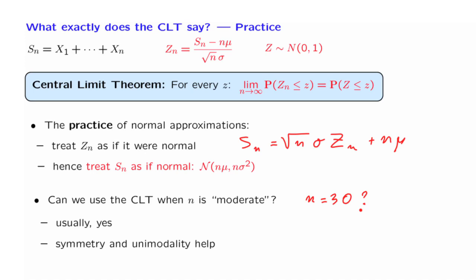It helps if the distribution of the X's that you're starting with has some common features with the normal distribution. If the X's are already normal, then S will be normal and there's no approximation involved. If the X's are close to normal, then for fairly small values of n, S will be very well modeled by a normal random variable. What does it mean that the distribution of the X's looks a little bit like the normal one? It helps if the distribution is symmetric around its mean, and it also helps if it is unimodal — in the sense that it has a single peak rather than multiple peaks.